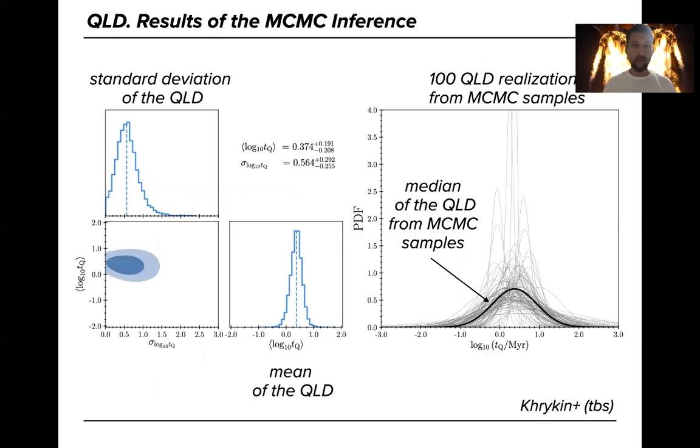The left triangle plot shows you the standard deviation and the mean of the quasar lifetime distribution which are beautifully constrained and the right panel shows you the 100 realizations from the MCMC samples and the black curve is the median of the samples.